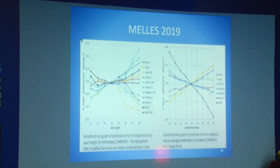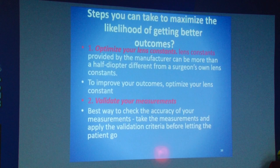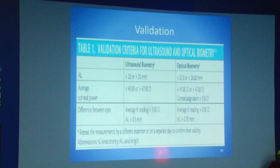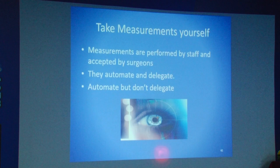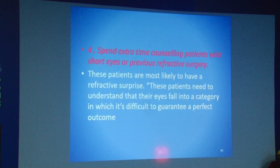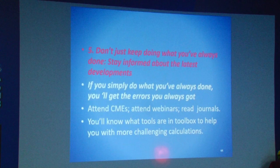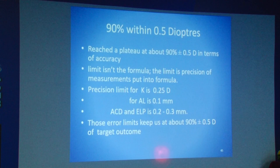The same was reciprocated by a publication by Melles in 2019 in JCRS. Steps to maximize the likelihood of better outcomes: optimize your lens constants; validate your measurements if readings are beyond normal — axial length under 22 or over 25 mm, keratometry under 40 or over 47 diopters. Take measurements yourself because the ophthalmologist is the most important and knowledgeable part of the team. Don't delegate it to your optometrist, particularly in premium and VIP patients. Spend extra time counseling patients with short eyes or previous refractive surgery.